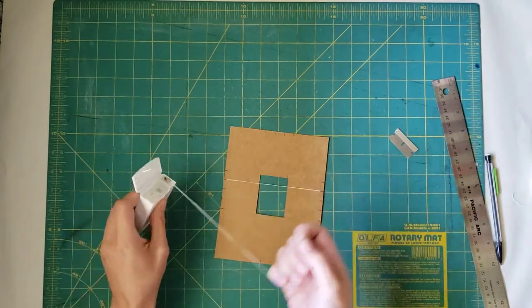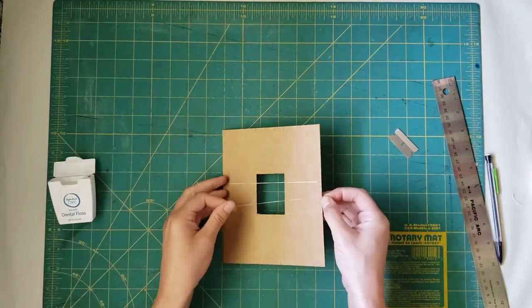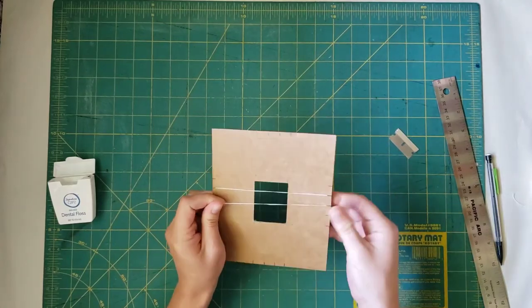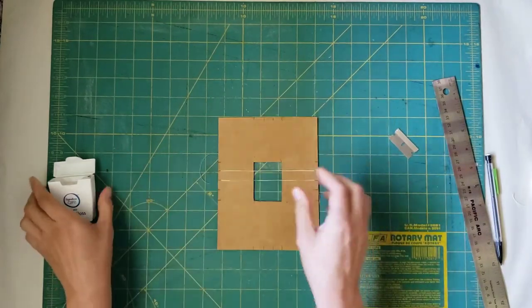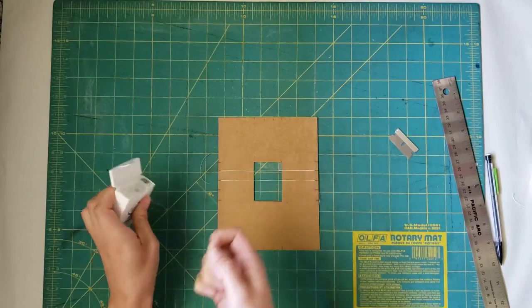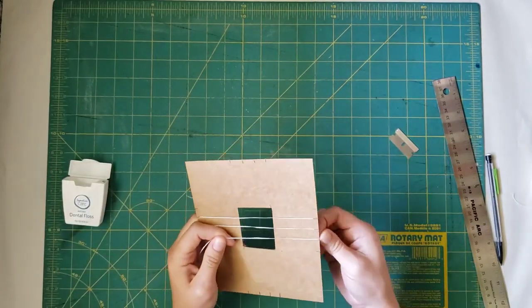Now tear a piece of floss that is slightly longer than the viewfinder so there is a little extra to wrap around the back side. Fit the floss into the little cuts you just made. Do this for all the floss on one side. Trim any excess.